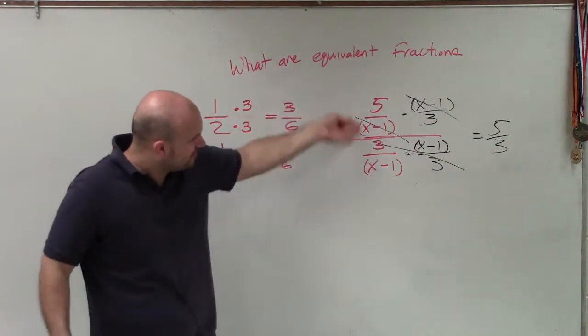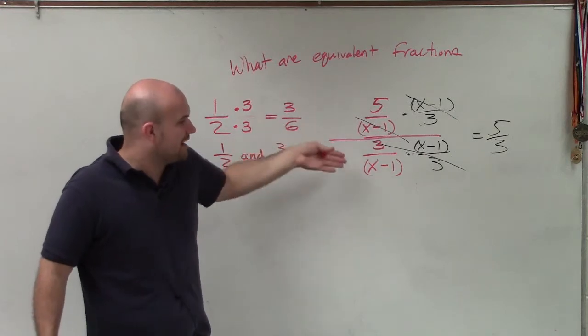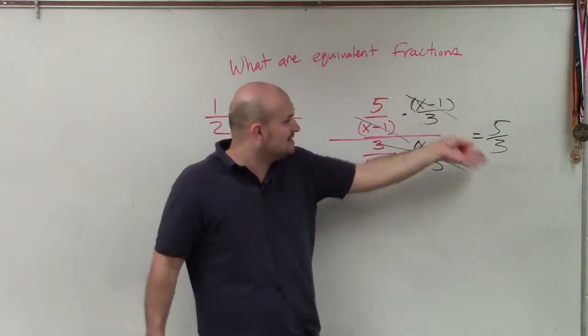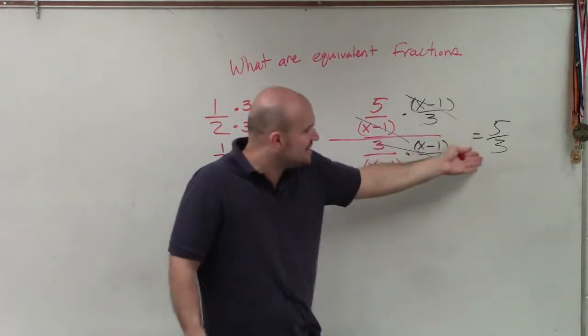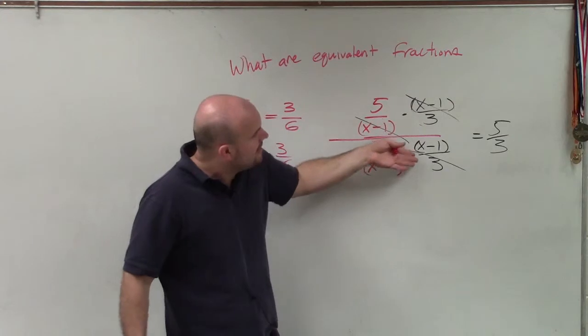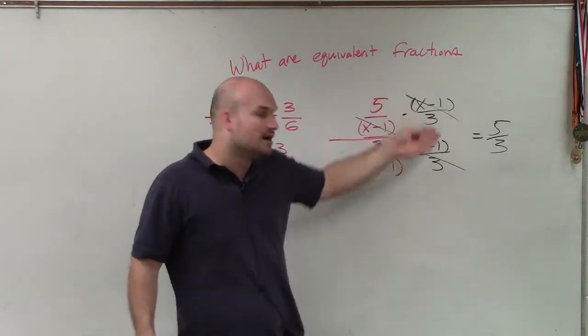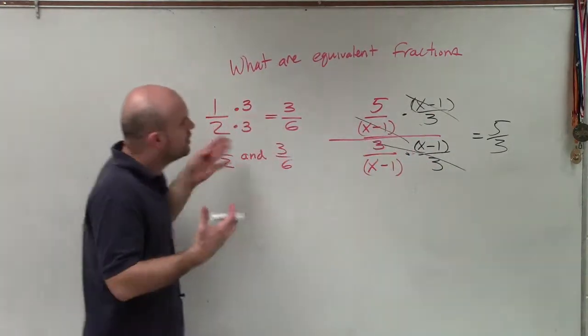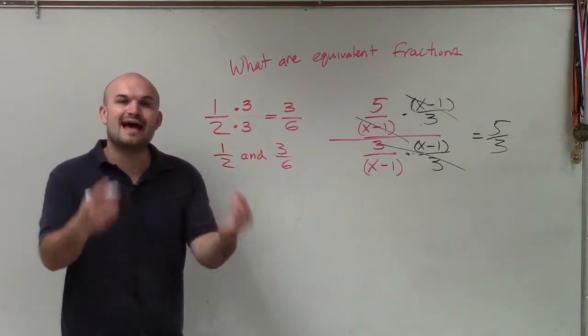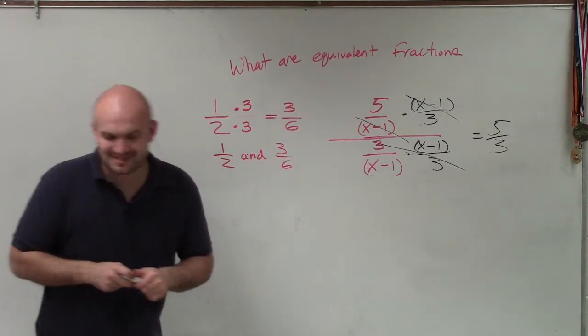So if you were given this problem, five over x minus one divided by three over x minus one, that is equivalent to five thirds. This just has a different representation of this. And the only reason why I know that's true is because I multiplied by an equivalent multiplier, which will always produce equivalent fractions. So there you go, ladies and gentlemen. That is what equivalent fractions are. Thanks guys.